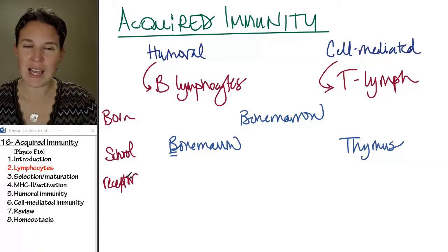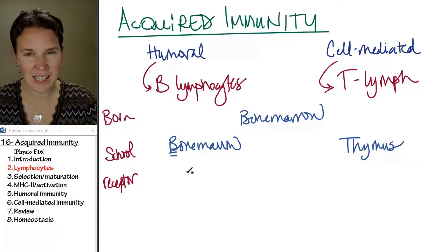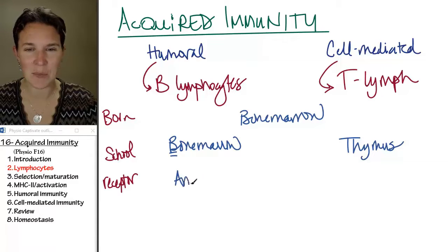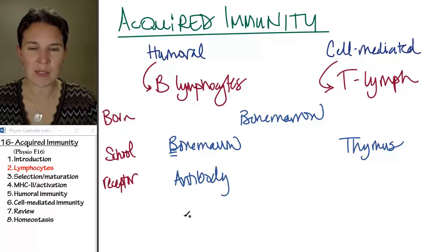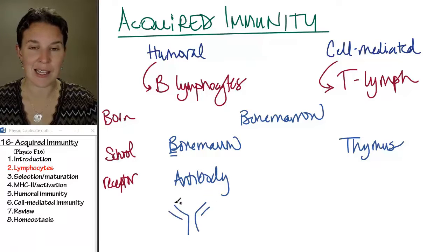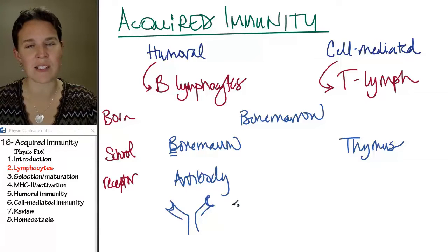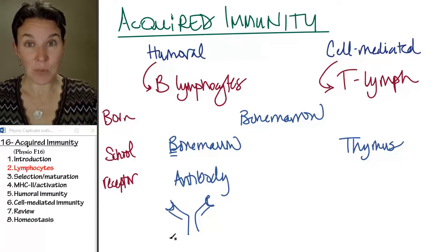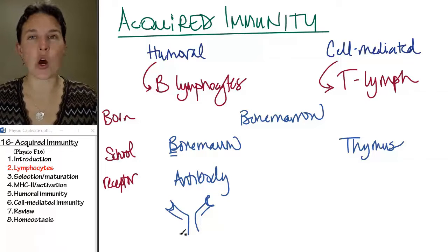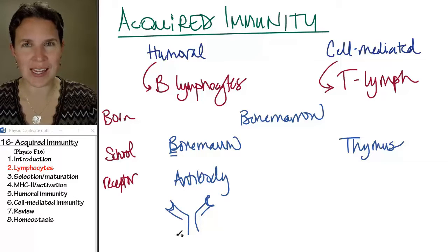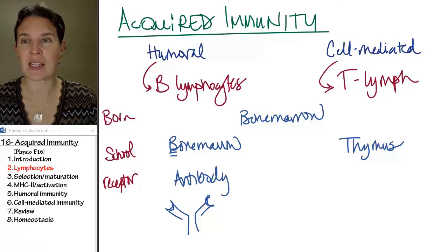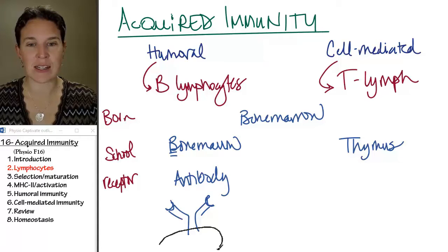Both lymphocyte types have a receptor. The B cell actually has an antibody, and remember that the antibody looks something like a Y-shaped molecule with a specific receptor on the ends. Each B lymphocyte has its own special antibody, and these antibodies are actually embedded in the B lymphocyte cell membrane.